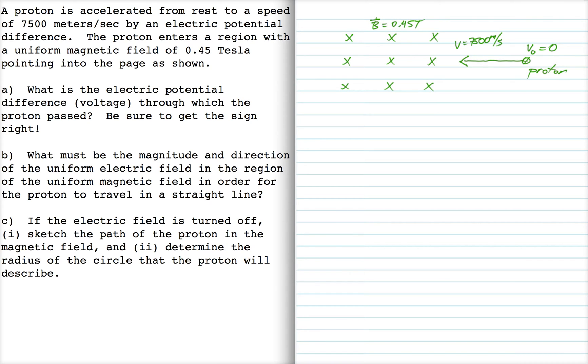So for part A, we want to know through what electric potential must the proton pass. So we'll use work energy here, and we'll say that the sum of the work's done by all the forces is equal to the change in kinetic energy, and we're going to assume that the only force is the electric force here.